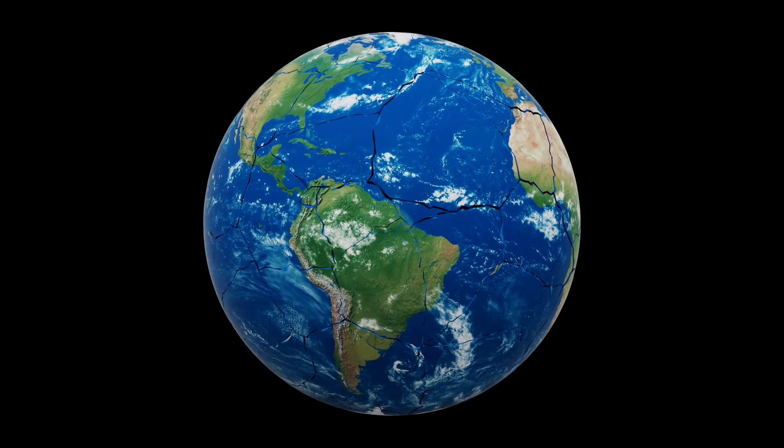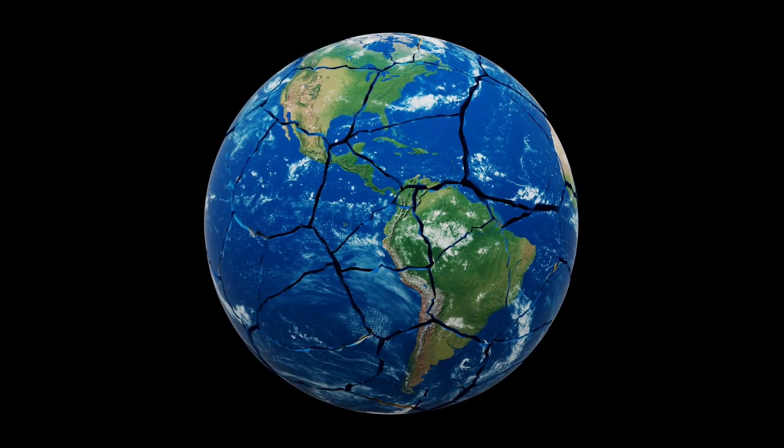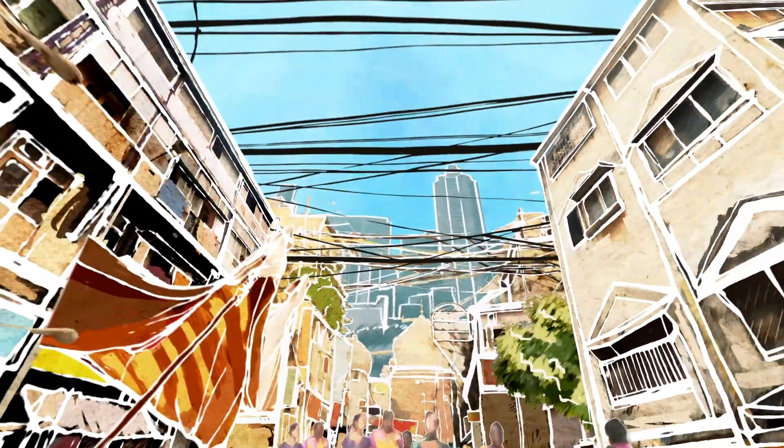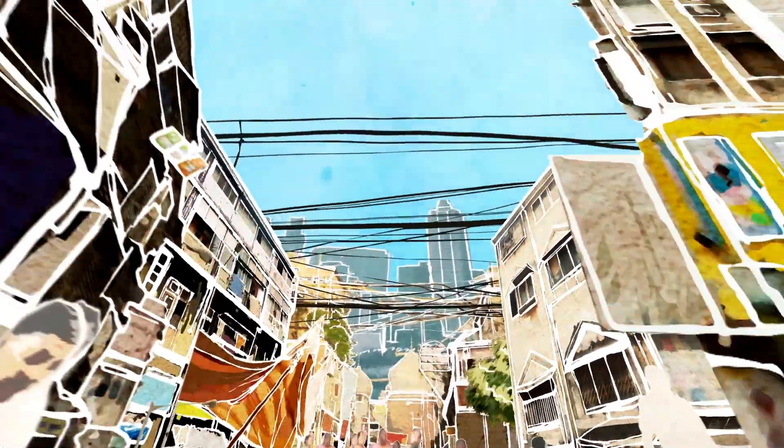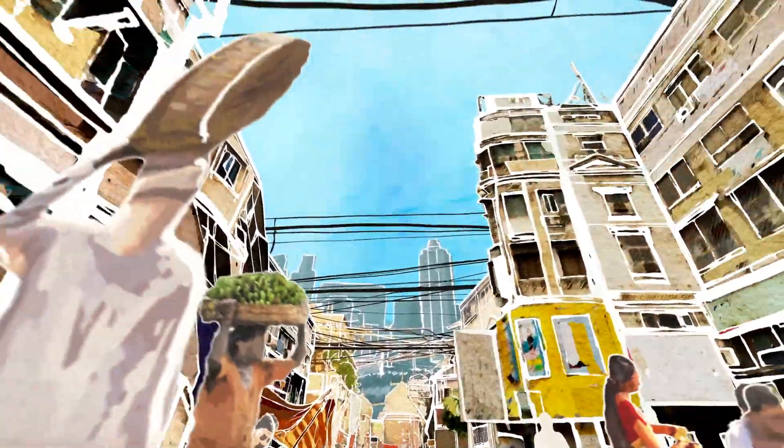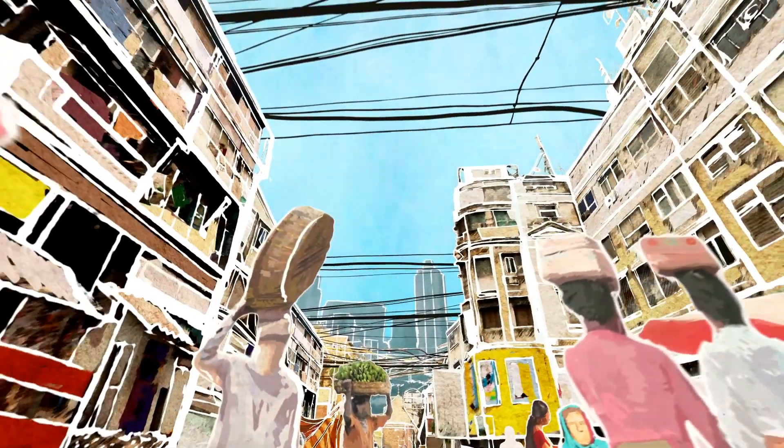If Earth stopped spinning suddenly, the consequences would be apocalyptic. Everything on the planet's surface—oceans, buildings, vehicles, and yes, even you—would keep moving at the original rotational speed. This is due to inertia—the principle that objects in motion stay in motion.